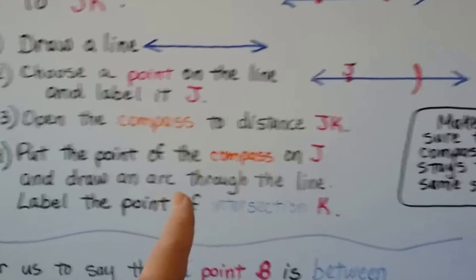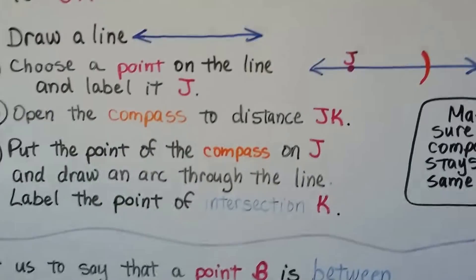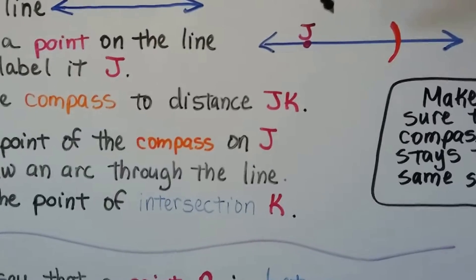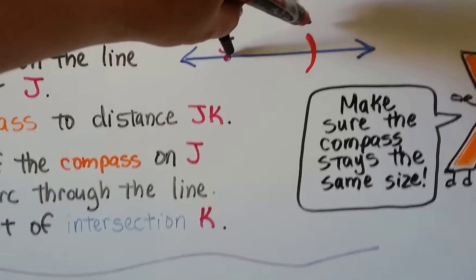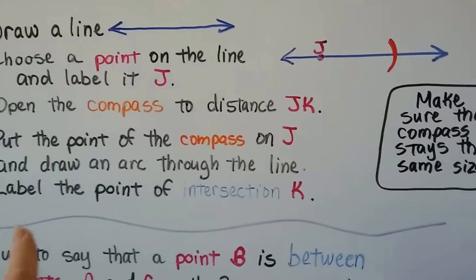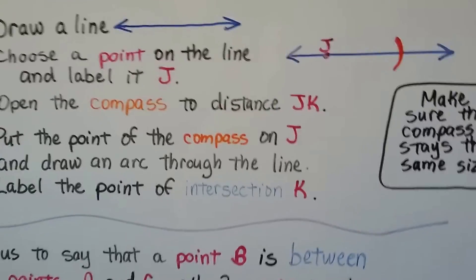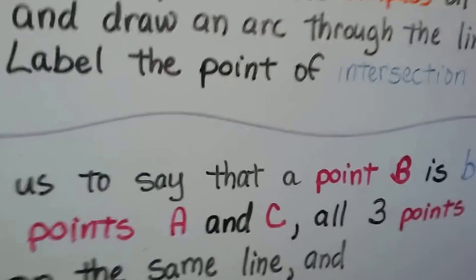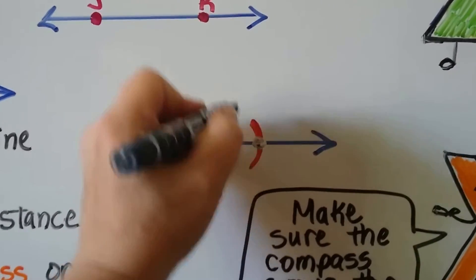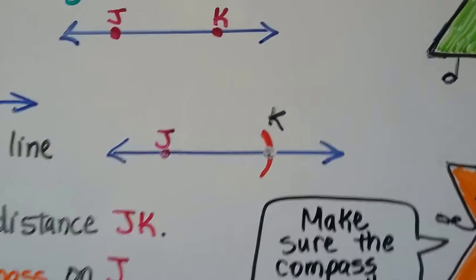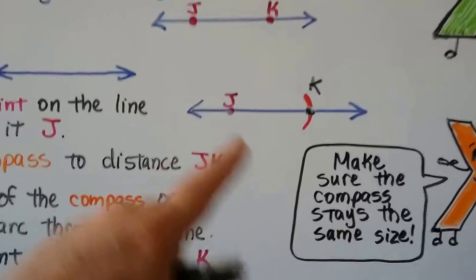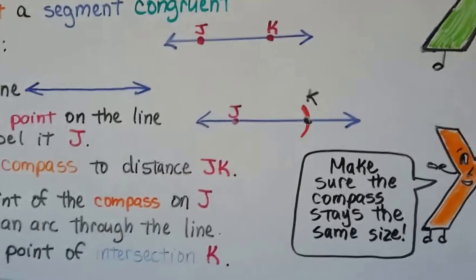Then we put the point of the compass, this pointy part here, on the line, on the J, and we draw an arc through the line, like I did here. See this arc that got drawn? And we label the point of the intersection K. Let me put this down. So that means we can label this right here as K. That's that spot that we drew the arc through. Just make sure the compass stays the same size when you're moving from this one to this one.